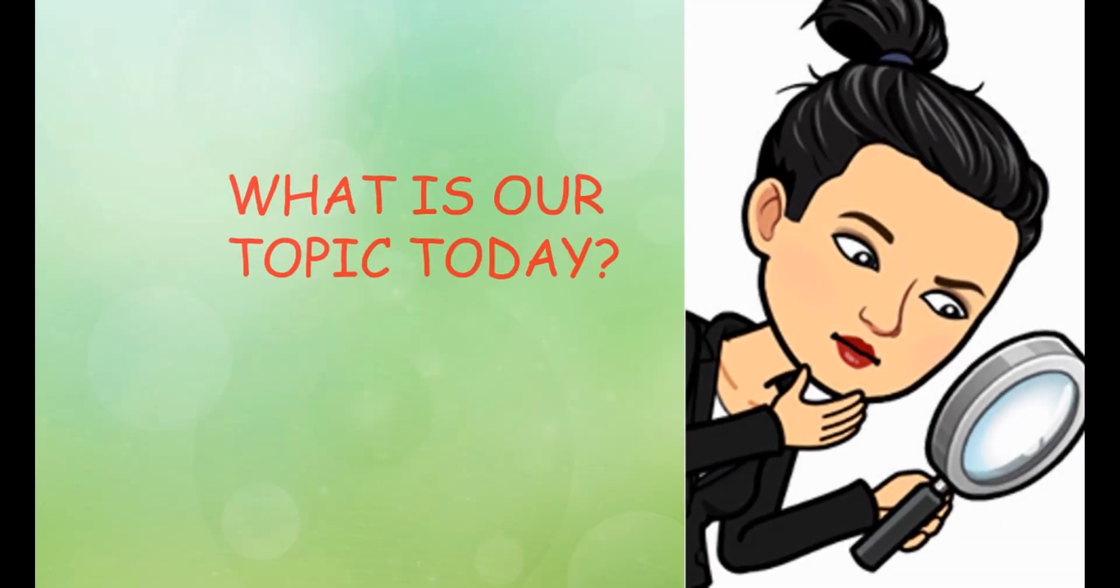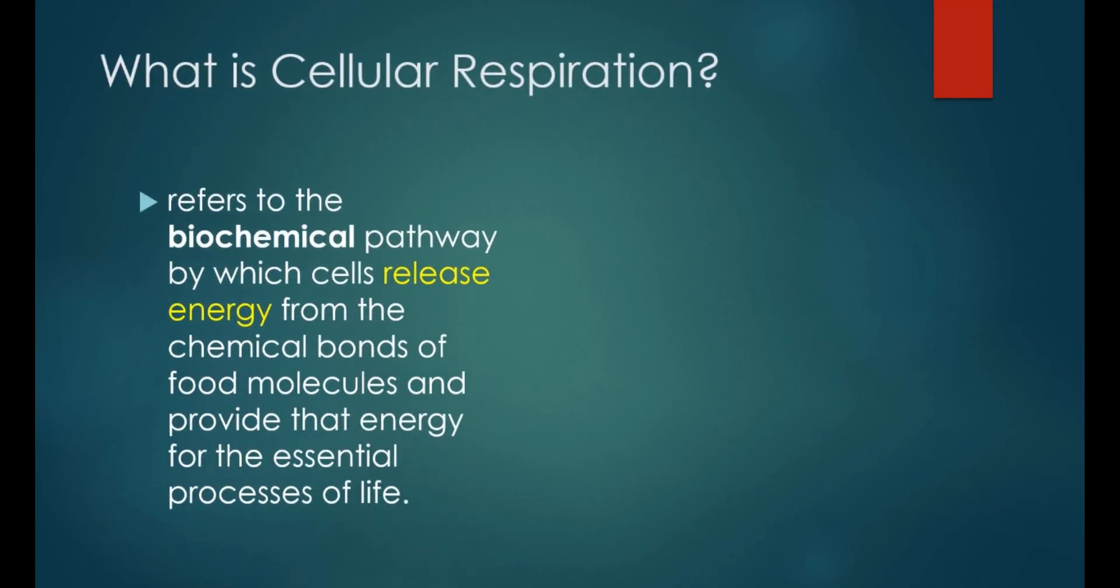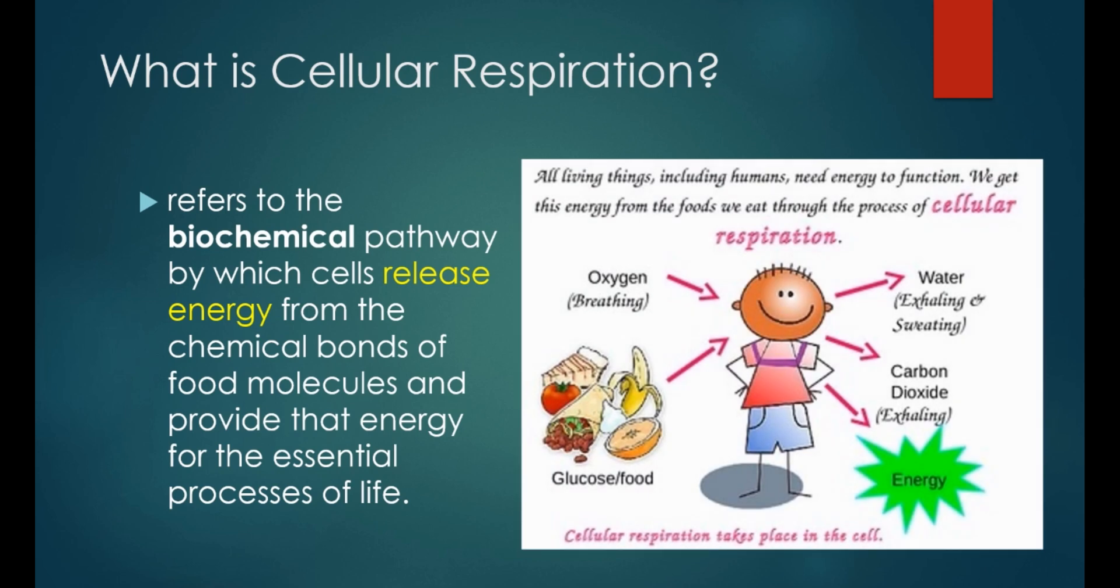So do you have an idea what we will be talking about today? That's right. We'll be talking about cellular respiration. What is cellular respiration? This refers to the biochemical pathway by which cells release energy from the chemical bonds of food molecules and provide that energy for the essential processes of life. All organisms need energy to carry out their functions in life. Since animals and humans are heterotrophic, we depend on plants and other organisms for food, not like plants that can make their own food through the process of photosynthesis.